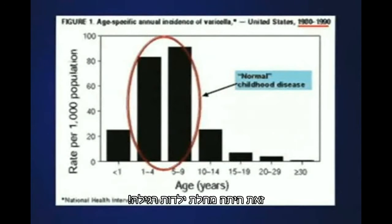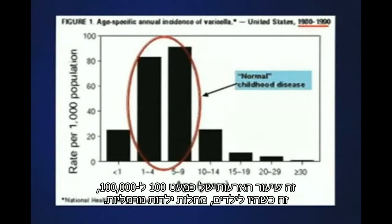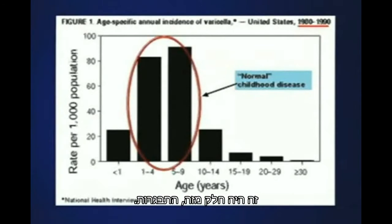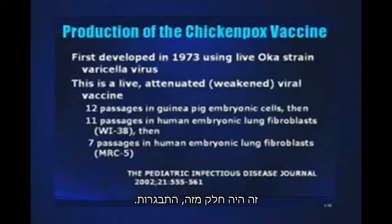This was a normal childhood disease. Kids ages one to nine — that's where the prevalence is, at almost 100 per 100,000. This was where kids had normal childhood diseases; that was part of growing up.